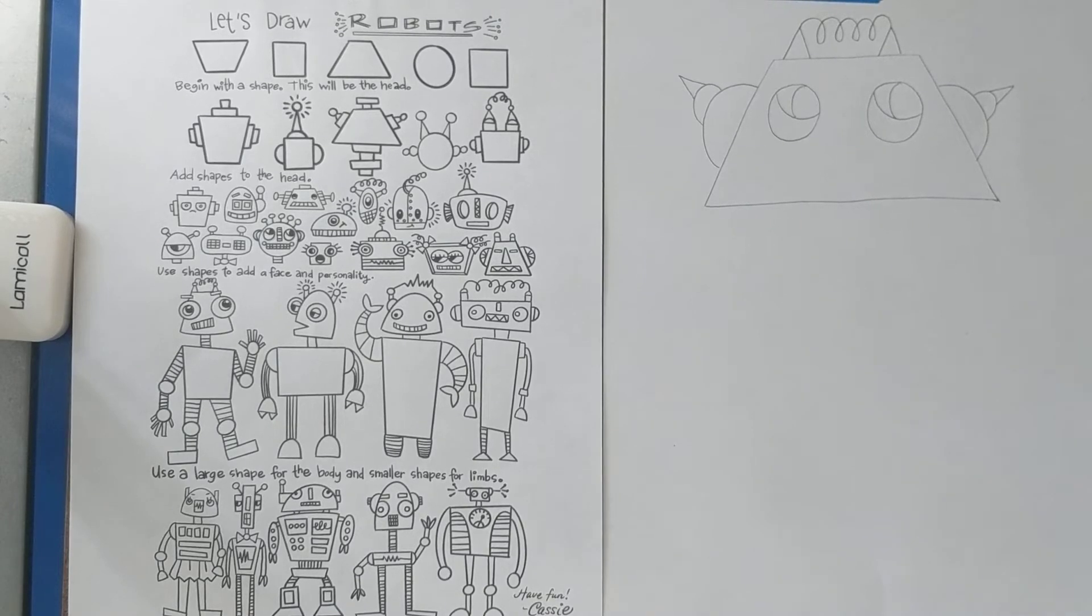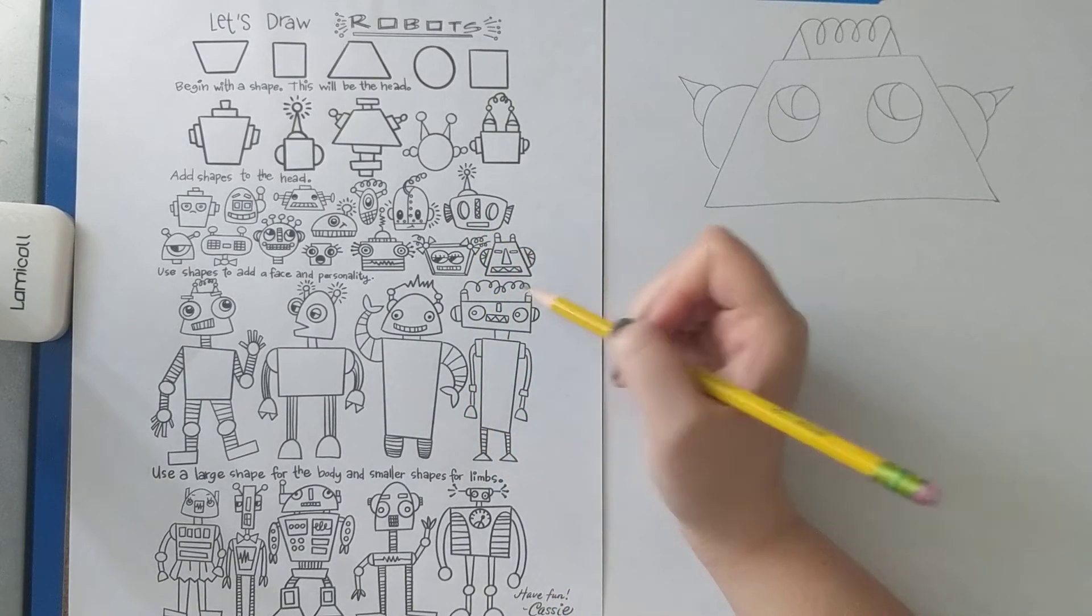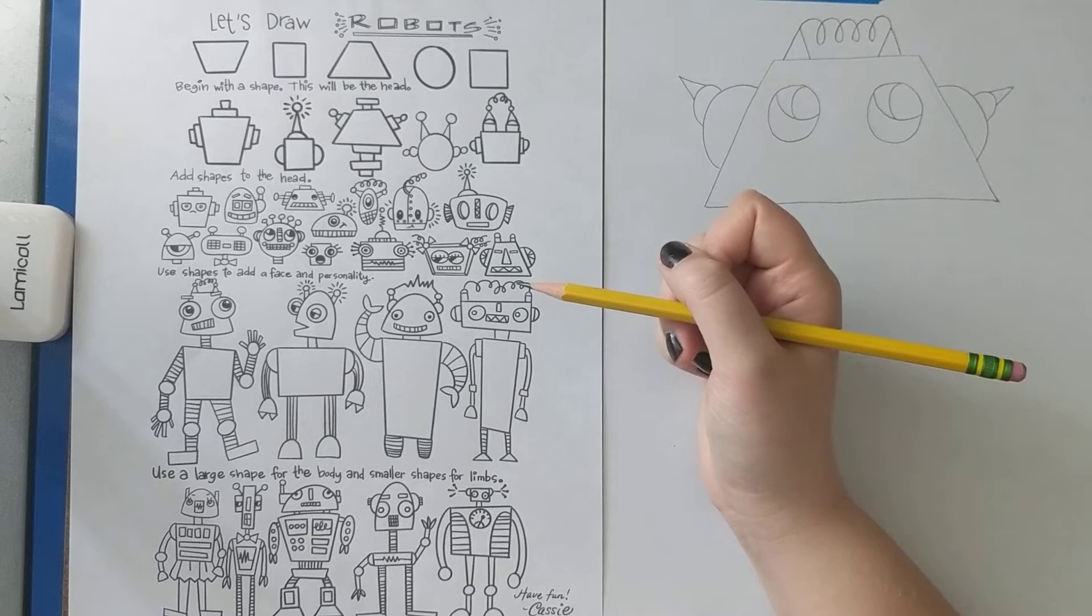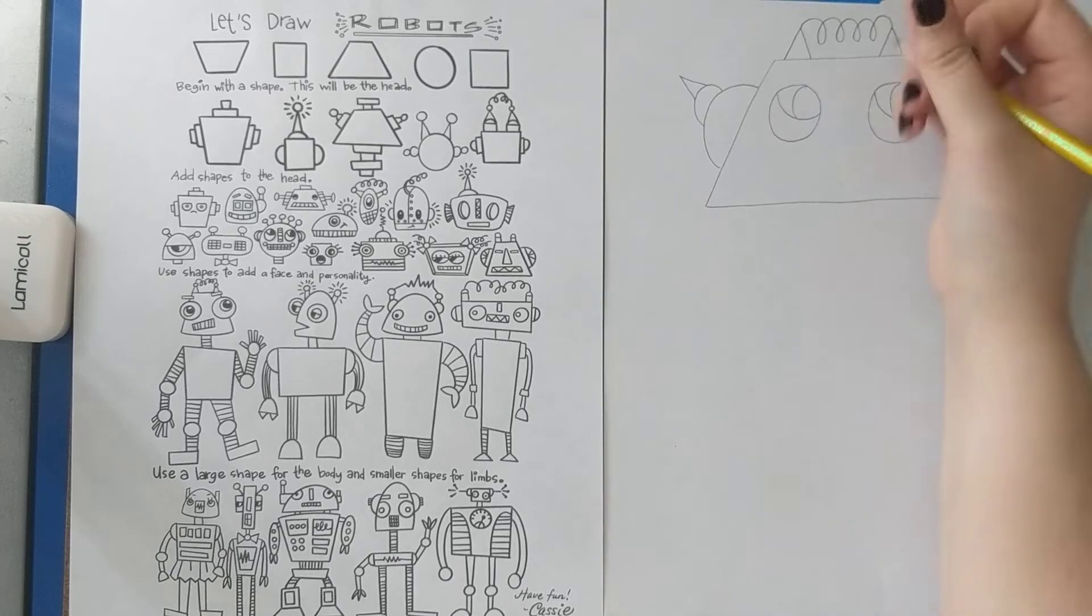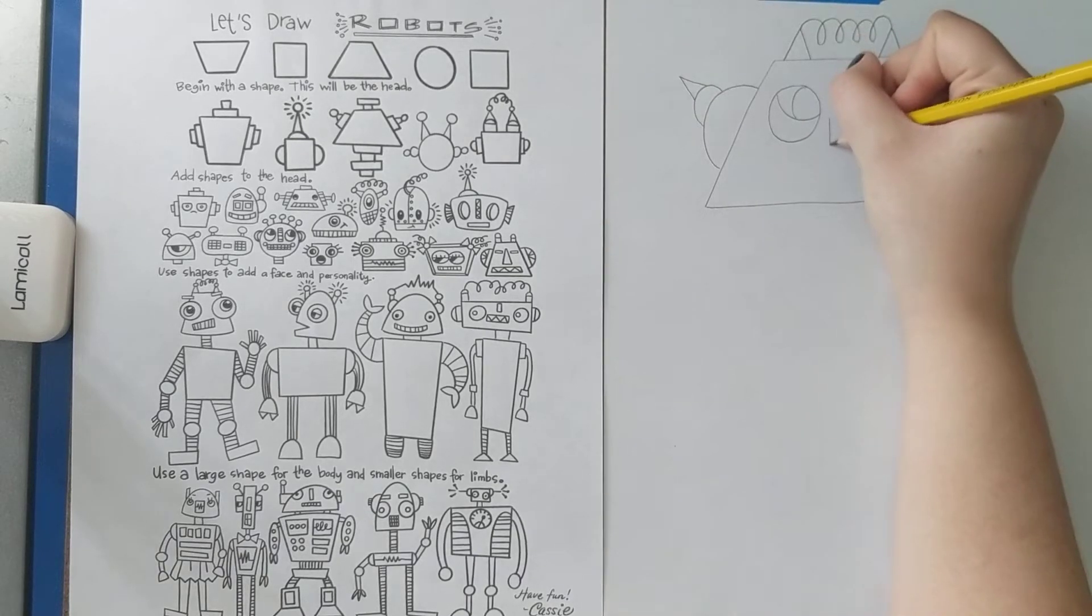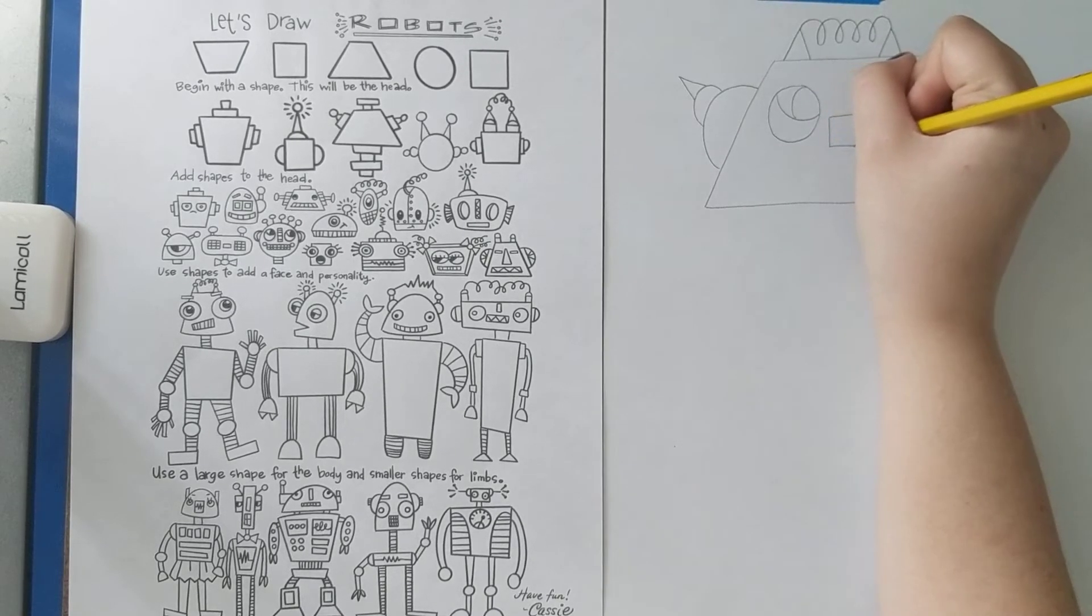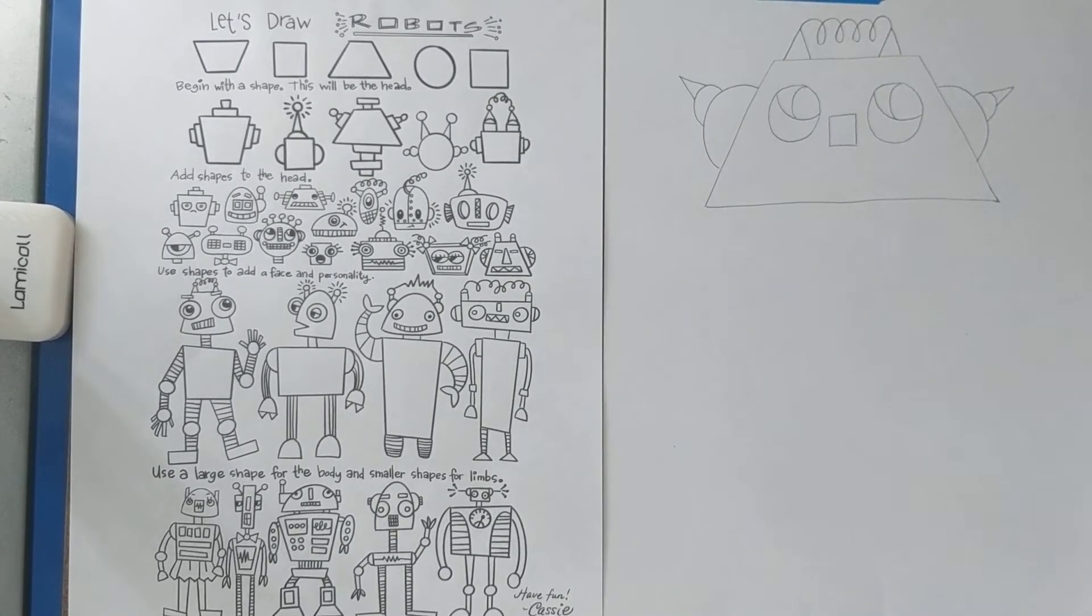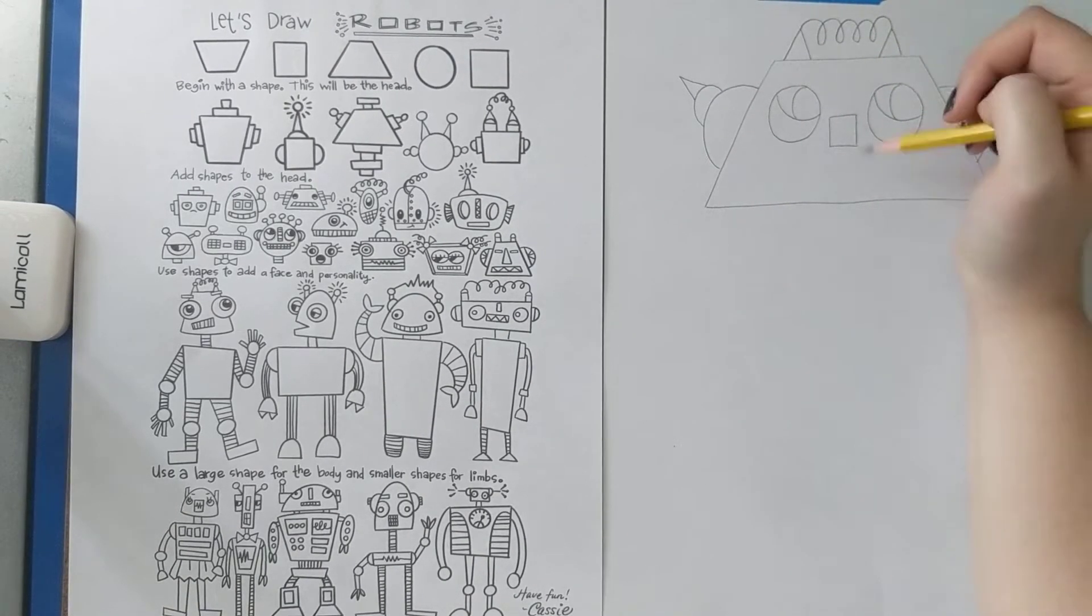So now I need a nose. I see a lot of noses that are like rectangles with some designs on the inside. Maybe there's some triangles. A lot of them don't actually have noses. So I guess a nose is optional if you'd like one. I think I want one. I think mine will have a little square nose. And maybe I'll leave it that way. I don't think I'm going to add anything else to the nose. The nose will be plain.